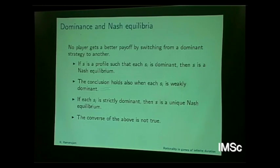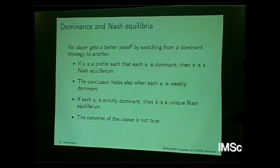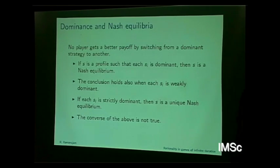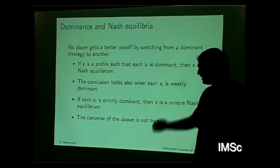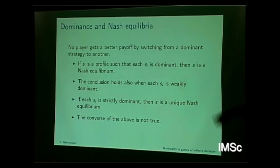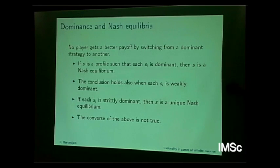This conclusion also holds when each S_i is weakly dominant. What about the converse? If S_i is strictly dominant, then S is a unique Nash equilibrium — if you have a profile where each S_i is strictly dominant, you can easily show this. The converse of the above is not true. There are a series of little propositions here for those from my game theory course — if you have not proved them, you should.